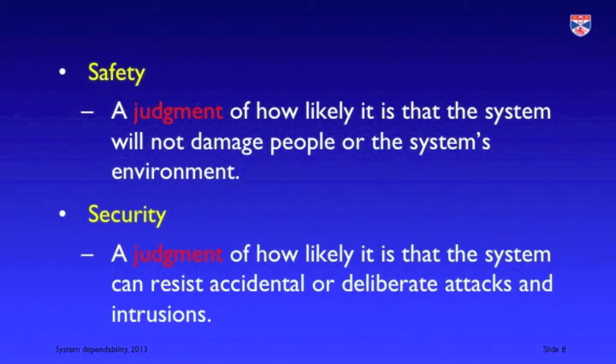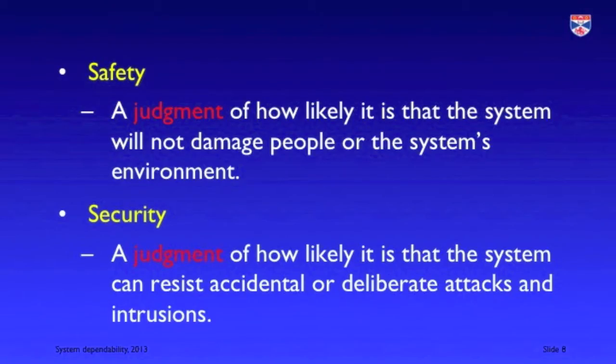Safety and security are judgments. We can measure availability and reliability, but we can't really measure system safety and security. System safety is a judgment made by a range of different people about whether or not the system is safe in its operation and that it will not cause damage to people, other systems, or the environment. System security is similarly a judgment as to whether the system is secure enough that it can't be compromised by external attack and that the system and its data will not be damaged by such attacks.